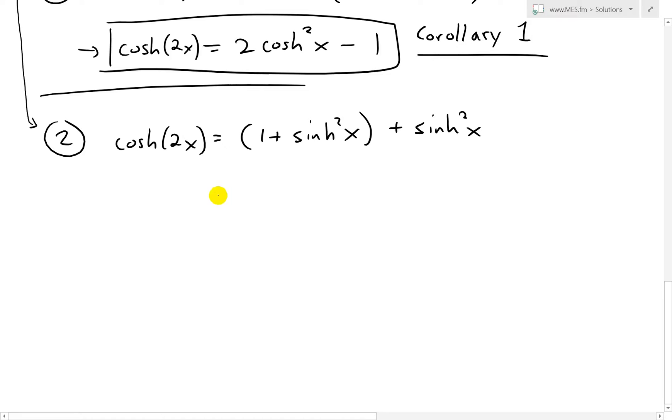And now those add up, this becomes 1 plus 2sinh²x like that, and there is our second corollary function for this double angle cosh(2x). There's another one you can get with tan, but we'll just leave it like this.